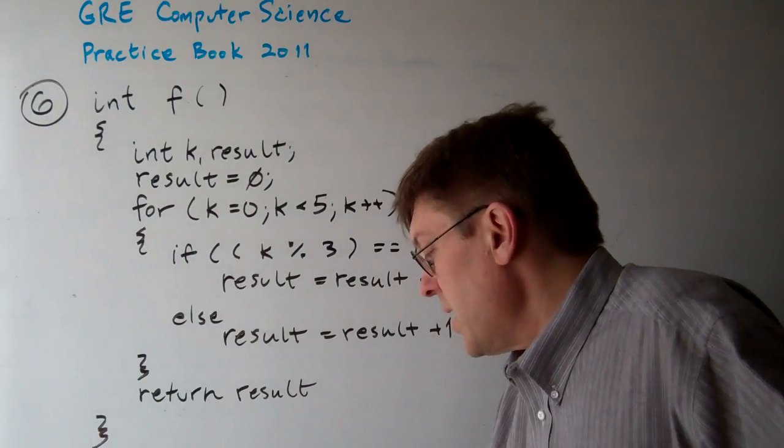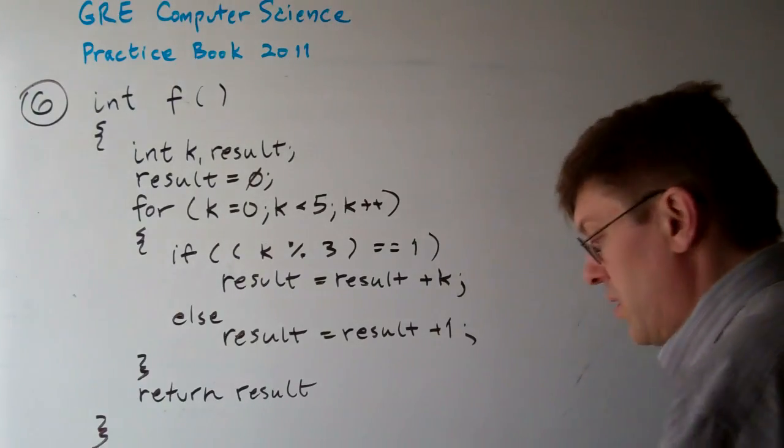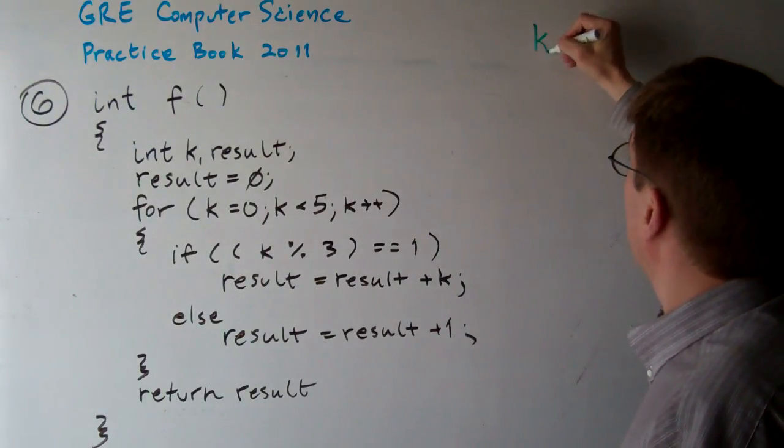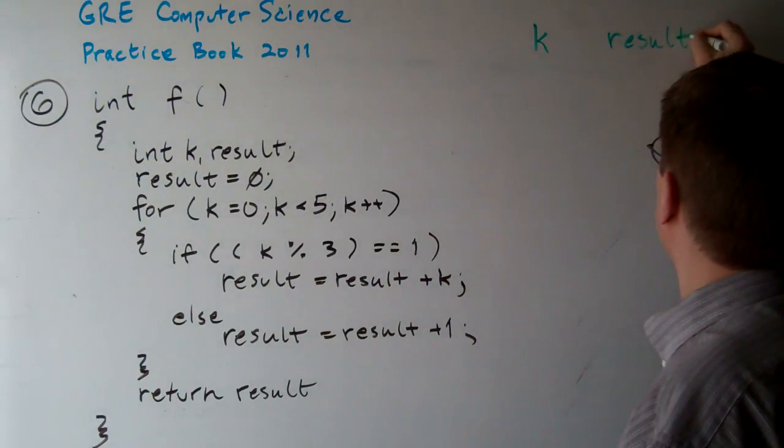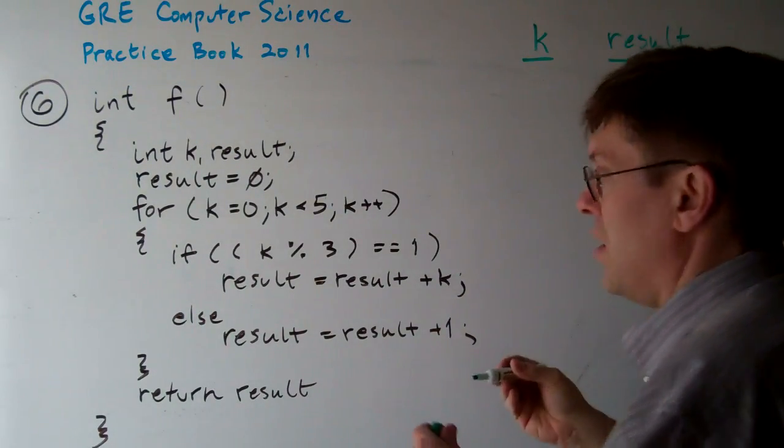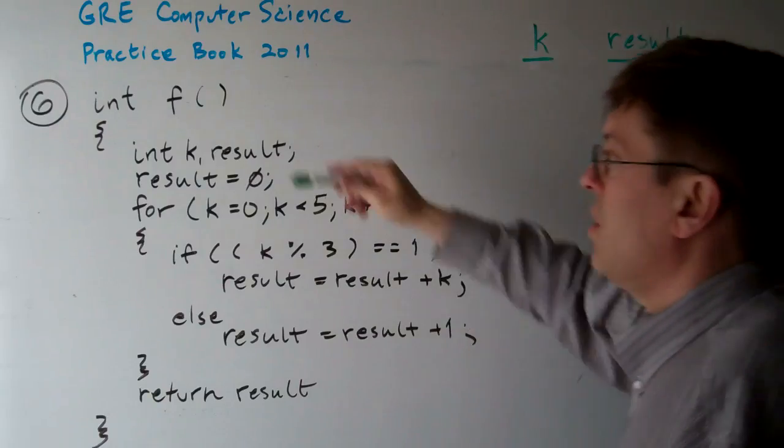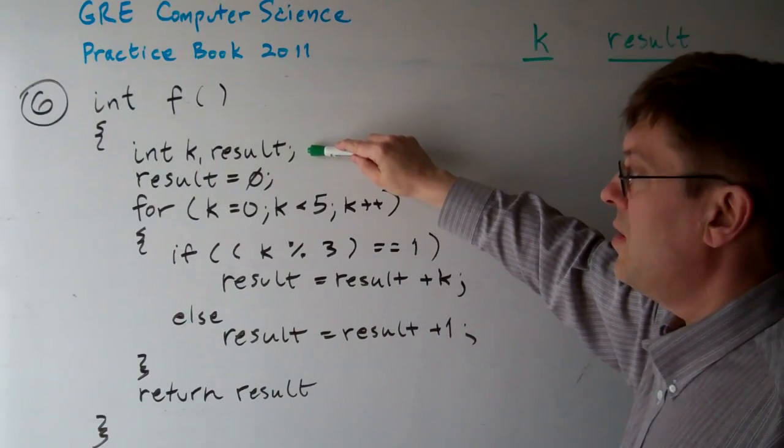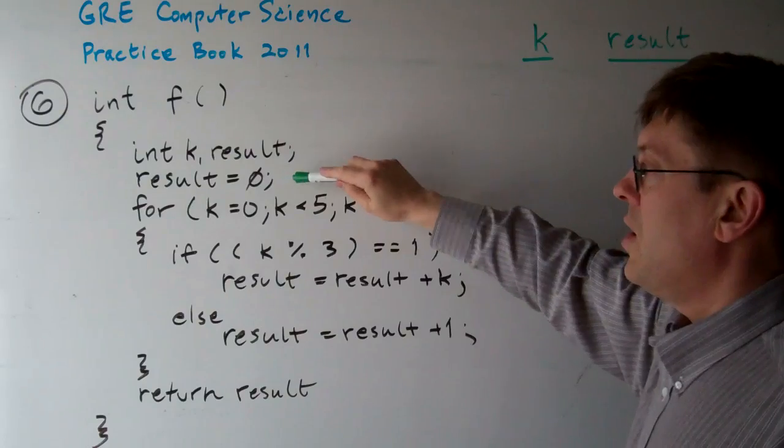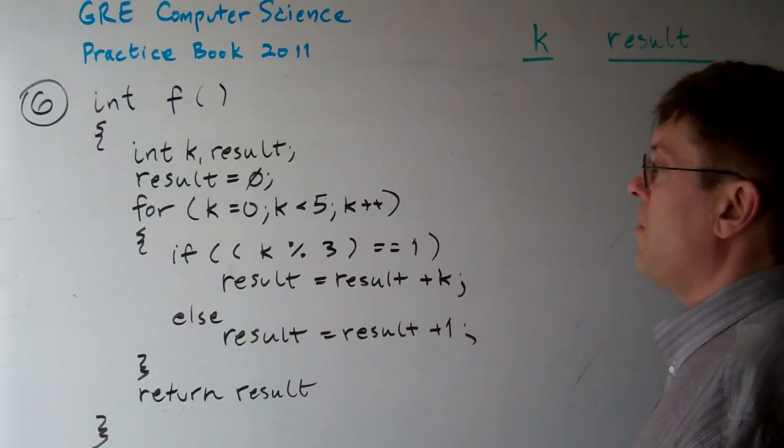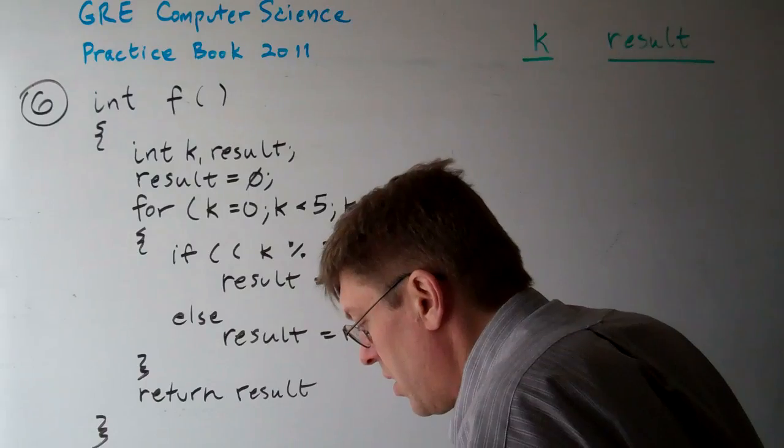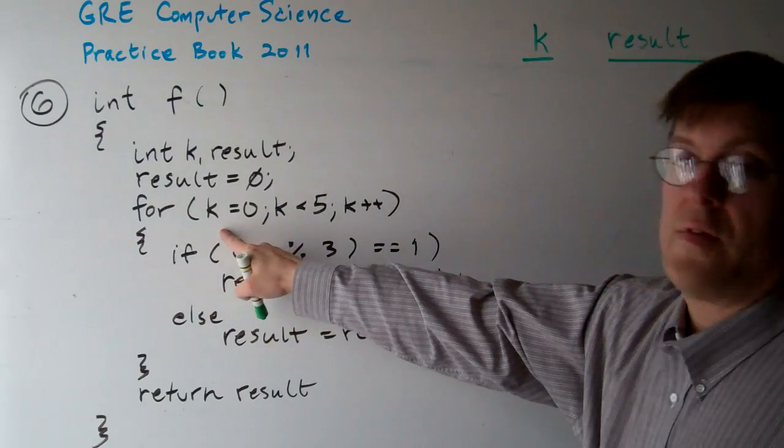So let's take a look at where we're at here first. Let's take a look at k. And let's look at the result. What happens? We go into the function f. We've declared these variables, k and result. The result starts off at 0. And k starts off at 0.